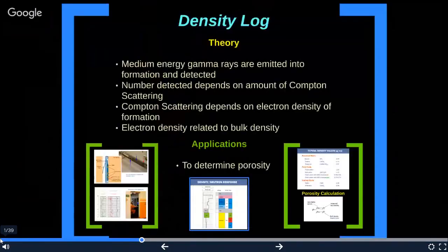As for the density log, density logging tools contain a radioactive source which is applied to the borehole wall in a shielded sidewall skid. The source emits medium-energy gamma rays into the formation. These gamma rays may be thought of as high-velocity particles that collide with the electrons in the formation. At each collision, a gamma ray loses some but not all of its energy to the electron, and then continues with diminished energy. This type of interaction is known as Compton scattering. The scattered gamma rays reaching the detector at a fixed distance from the source are counted as an indication of formation density.